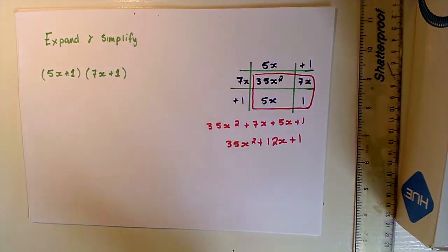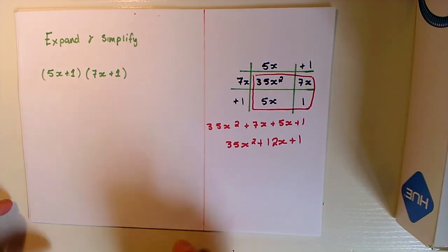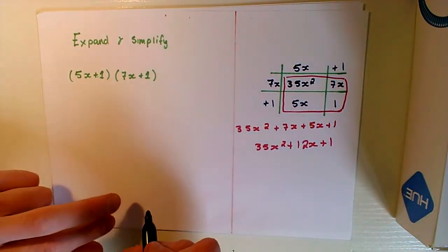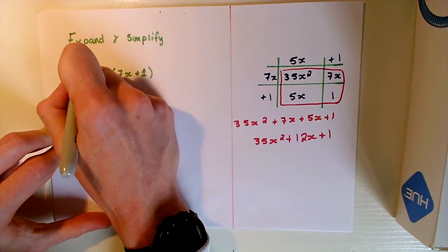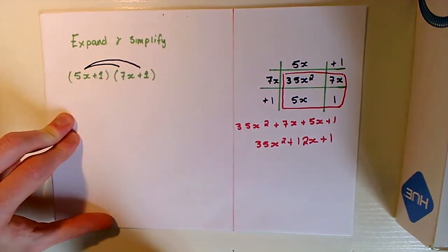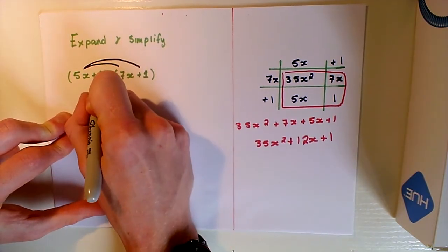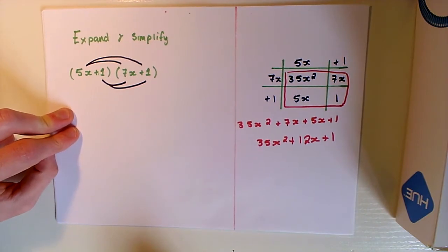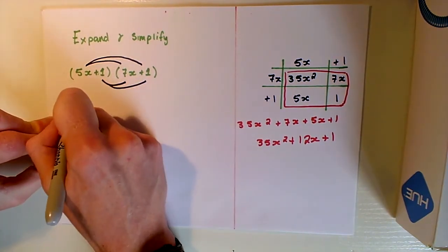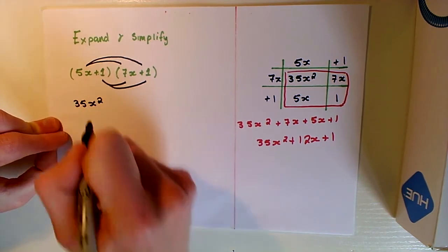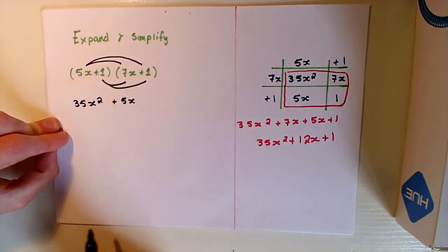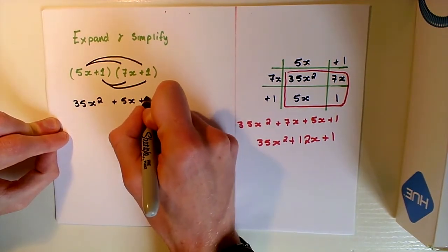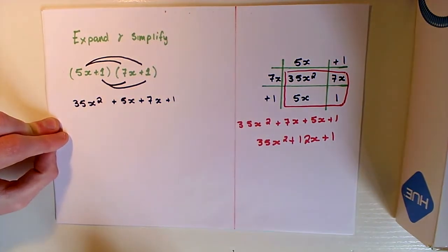Our alternative method we will do on the left-hand side of this page. What we need to do again is make sure that we multiply each element in the first bracket by each element in the second bracket. We are going to have our 5X times 7X, we are going to have our 5X times 1, we are going to have 1 times 7X, and then 1 times 1. So 5X times 7X, that's 35X squared. We have 5X times 1, which is plus 5X. Then we go for the second element of the first bracket, so we have 1 times 7X, which is just 7X, and then we have 1 times 1, which is 1.